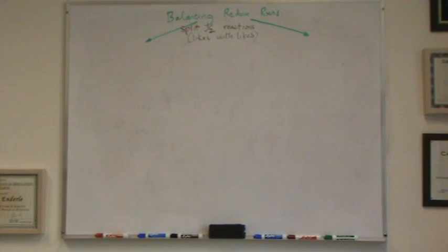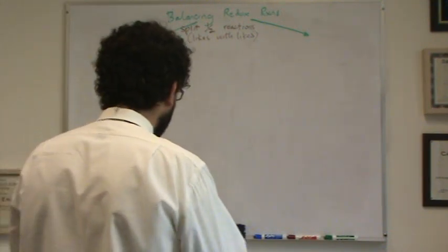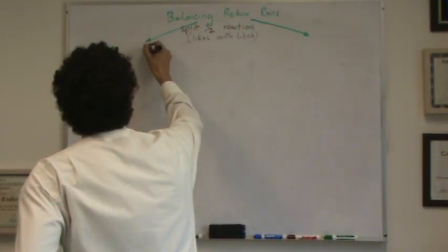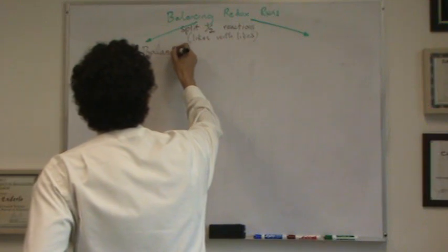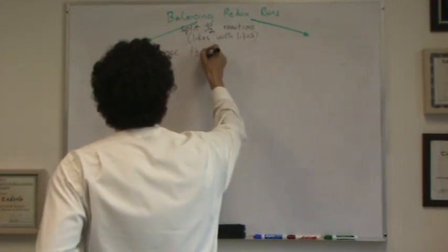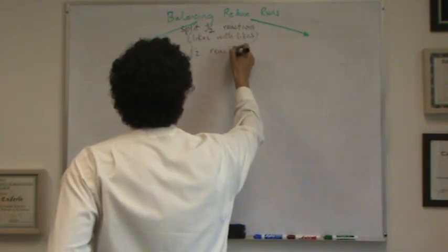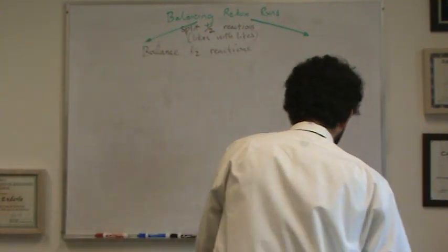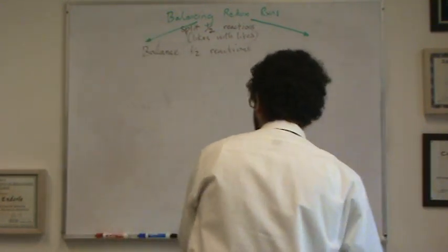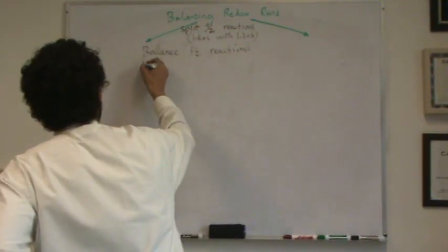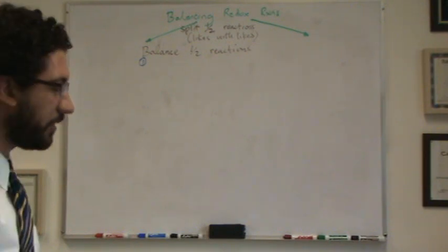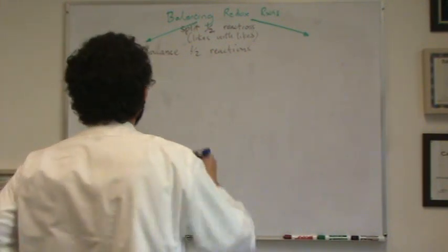It is actually going to turn out, though it adds steps, it's going to turn out to be the easiest way. Alright, after you split into half-reactions, then you need to balance the half-reactions. And to balance them, there's a four-step method to follow. Let's go through this four-step method. Always use these four steps.